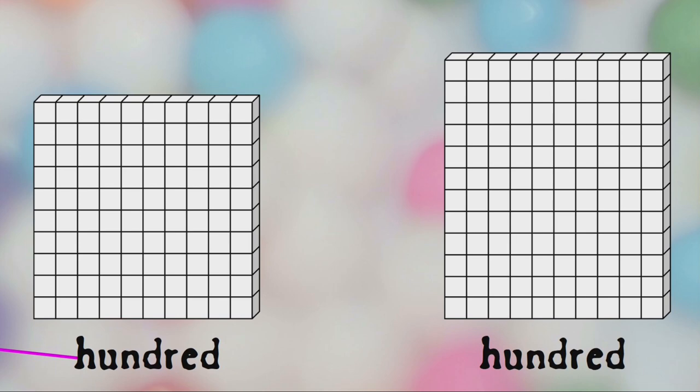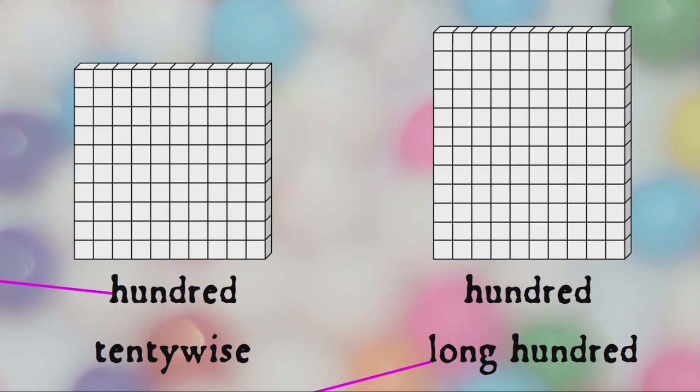To avoid confusion, the two ways of counting can be distinguished, with the newer count called 'tentywise' — that is, by tens — and the old sense of hundred called the 'long hundred.'